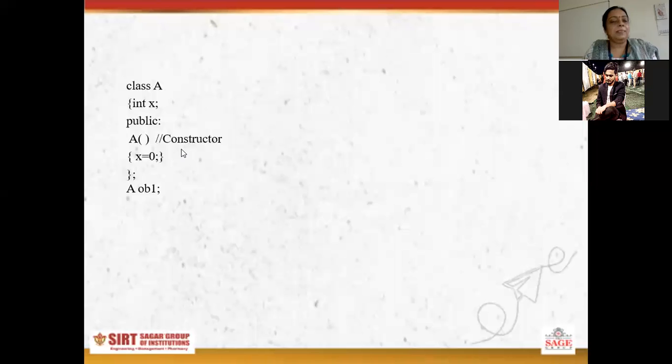Okay, we have done this in previous lecture. For example, class A. So we can say function A is a constructor where we are initializing the value of X. X is a member of class. It must be in public area because we call this function outside the class.